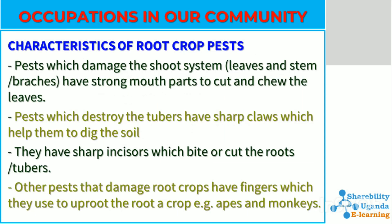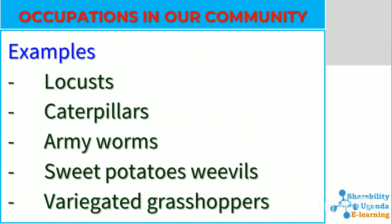Characteristics of root crop pests: They have strong mouthparts that cut and chew the leaves of root crops. Pests that destroy the tubers have sharp claws which help them to dig into the soil. They have sharp incisors which bite or cut the root crops or tubers. Other pests include locusts, caterpillars, armyworms, sweet potato weavils, and variegated grasshoppers, among others.